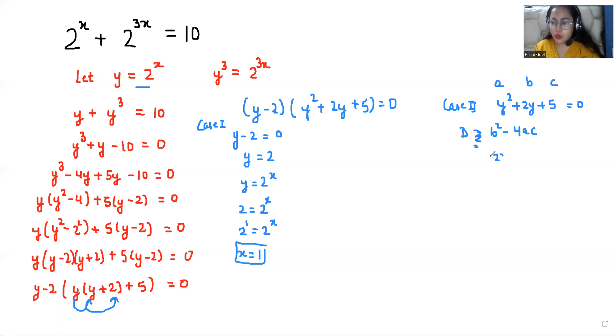So b^2 is 2^2 - 4 times coefficient of y^2 is 1 and c is the constant that is 5. 2^2 is 4 - 20, that is -16. So the value for this root is -16. This is negative, so we are going to reject this. So the value for this equation will be x = 1.